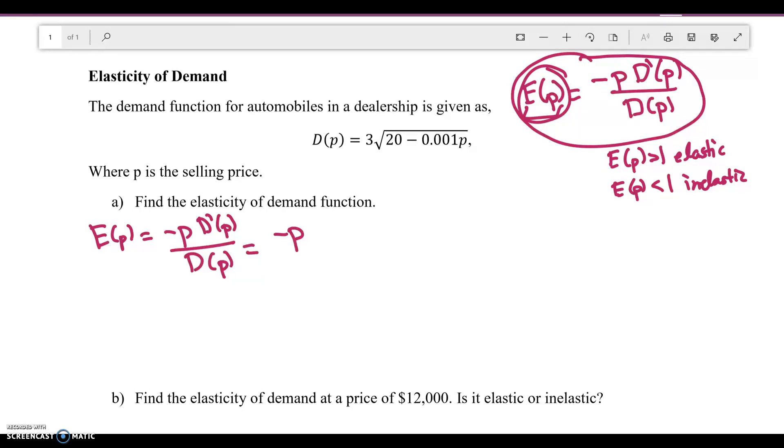This can be kind of crazy because we have a square root. The 3 isn't going to do anything, so I'm just going to leave the 3 there. This I can rewrite as 20 minus 0.001P raised to the power of 1 half. To take the derivative of this, remember we have to take the 1 half and move it over and then subtract it from 1. So we're going to have 1 half times 1 half, and then in the inside 20 minus 0.001P, this is now going to be to the negative 1 half power. Now I'm going to multiply this by the derivative of the inside. Using the chain rule, the derivative of P is just 1, so all I'm left with is negative 0.001.